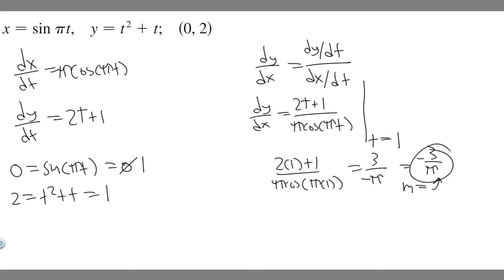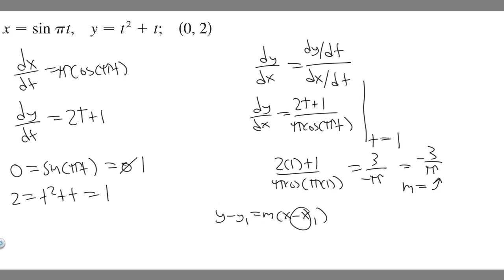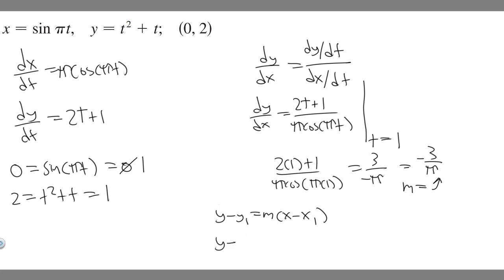Since we have m, we use point-slope form: y − y₁ = m(x − x₁). They gave us the point (0, 2), so x₁ = 0 and y₁ = 2. Plugging in: y − 2 = (−3/π)(x − 0), which simplifies to y − 2 = (−3/π)x. Adding 2 to both sides gives y = (−3/π)x + 2.